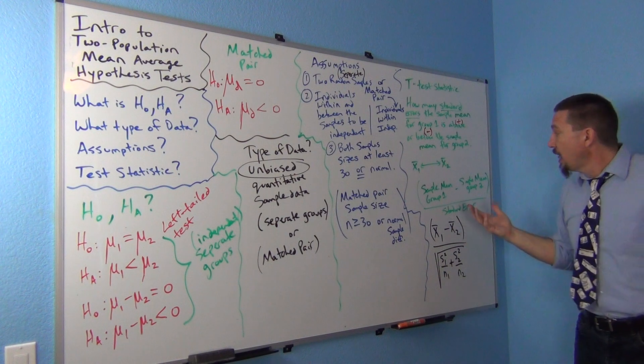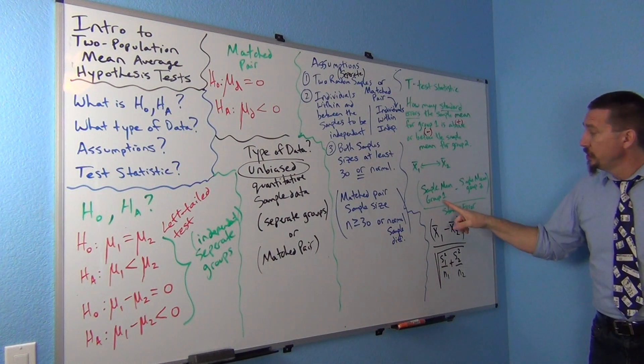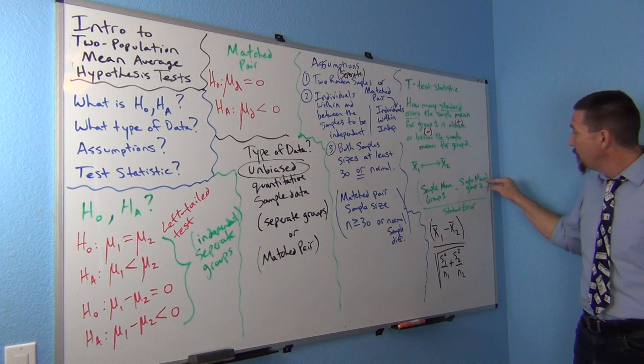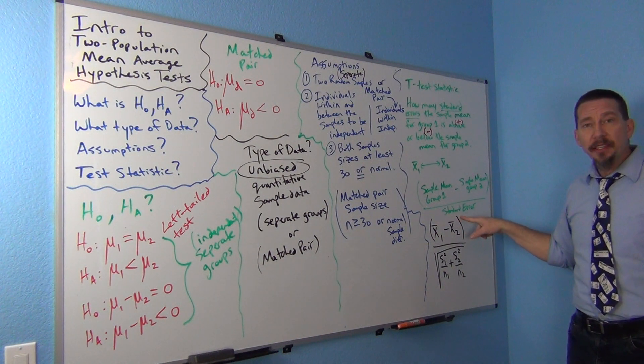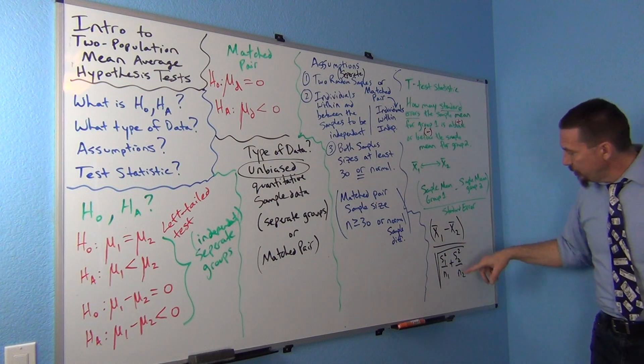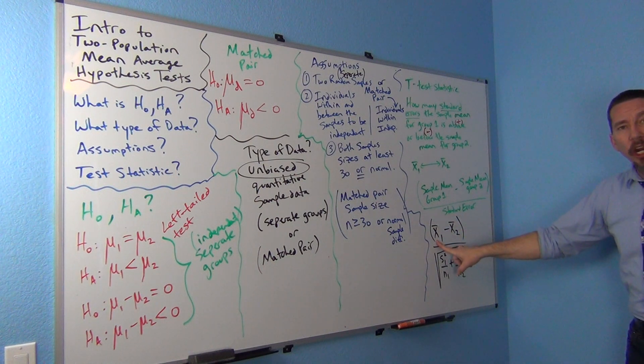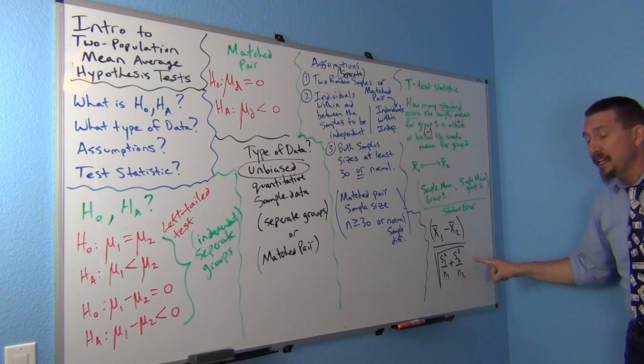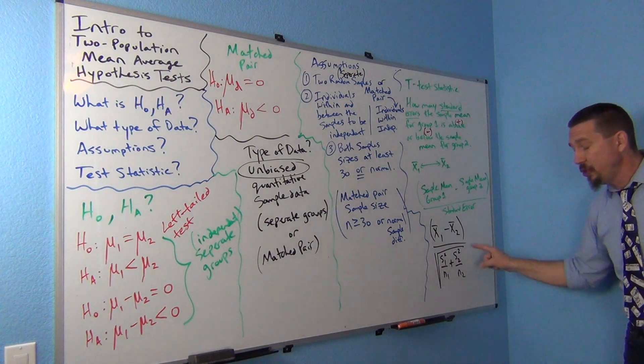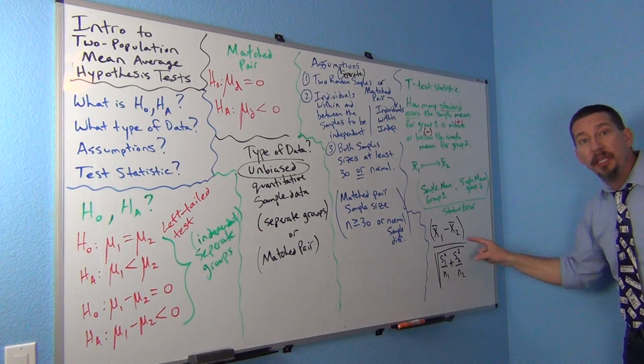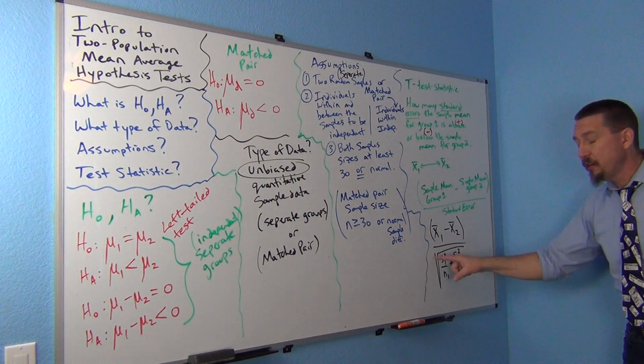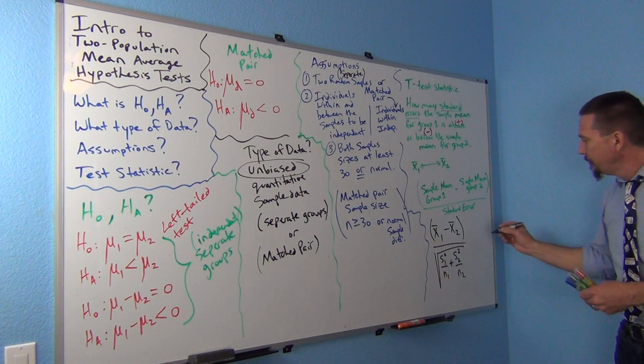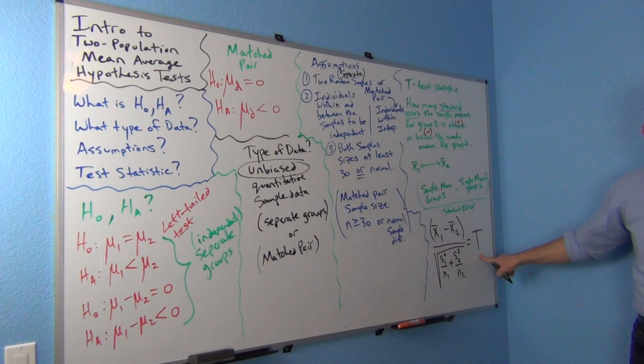So the formula really looks a lot like the one we did for proportions. You're going to get the sample mean for group one minus the sample mean for group two. Sometimes you'll see stat books say minus zero divided by the standard error. So if we go down here, we see x bar one minus x bar two, the sample mean difference. This, again, is the estimate of the standard error. It's actually the same exact formula we used for two population mean confidence intervals. And this is going to be equal to our t-test statistic.